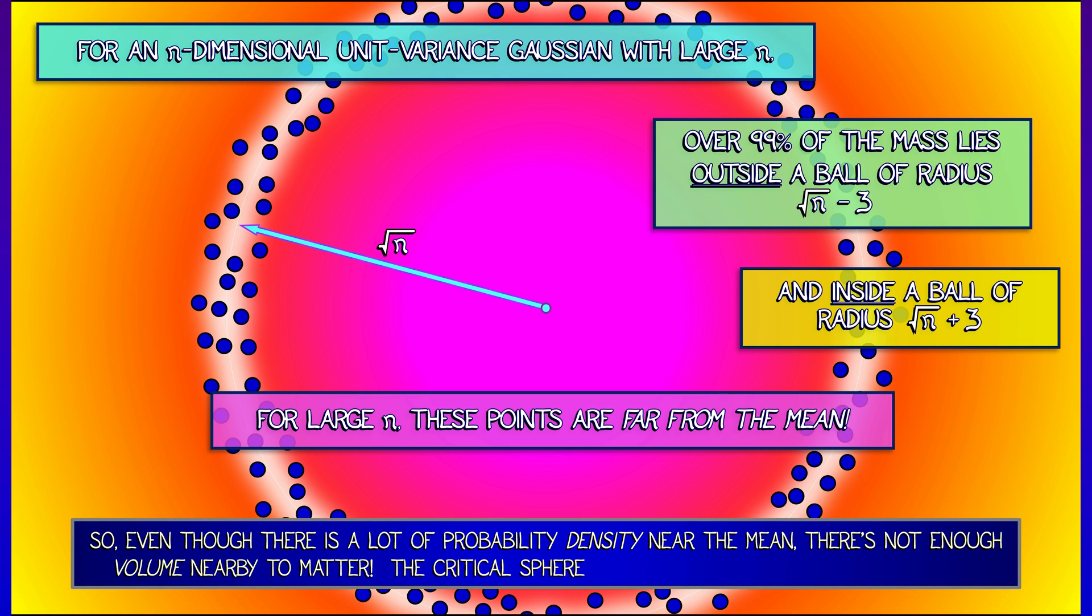So even though there's lots of probability density near the mean, there's not enough volume there to really matter. And there's this critical sphere of radius square root of n where the density and the volume balance.